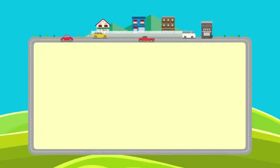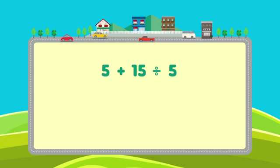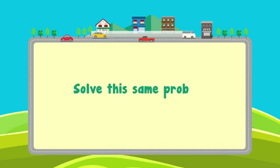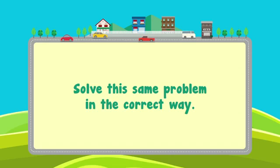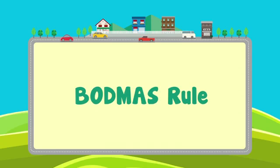Let me tell you why. We have learnt to carry out the four operations — addition, subtraction, multiplication and division — separately. Now let us further learn to solve problems in which two or more operations occur in the same problem. When you solved the problem 5 plus 15 divided by 5, you first found the sum of 5 and 15, which is 20, and then divided 20 by 5 which equals 4. Hence your answer was 4. Now let us solve the same problem in the correct way. For such problems with two or more operations involved, we use the BODMAS rule to perform the operations in a particular order.